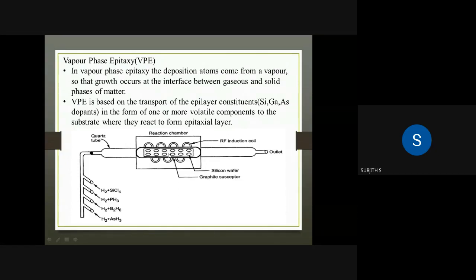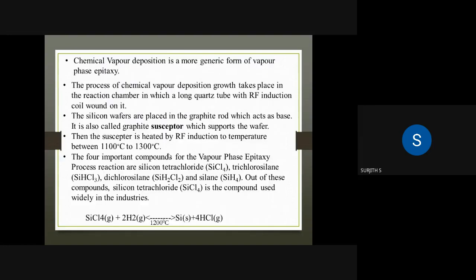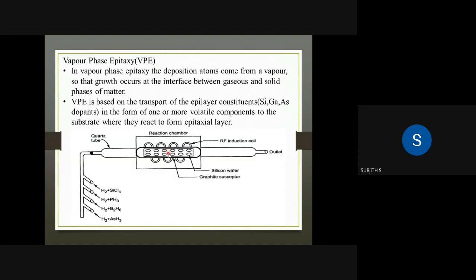As a reaction example, H₂ plus SiCl₄ is the vapor formula used in vapor phase epitaxy to obtain an epitaxial layer of silicon.